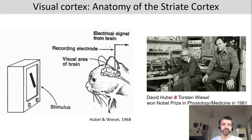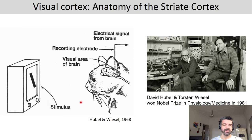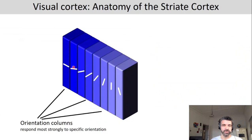A very important discovery for a better understanding of the visual system was the finding that there are neurons that very strongly respond to a stimulus of a specific orientation. This was found by accident by Hubel and Wiesel in 1968. They did some visual experiments with cats and there was a crack on the screen. They found that some cells were responding very strongly to this crack but not to any stimuli of a different orientation. They followed up and compared stimuli of different orientations, and as a result the orientation columns were discovered.